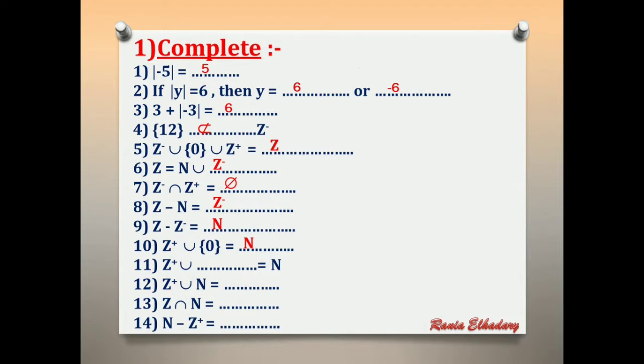Number 11: Z positive union {1} equals N. Z positive equals 1, 2, 3 and so on. And natural number is 0, 1, 2, 3 and so on. So we will be adding the 0.